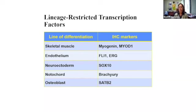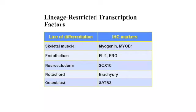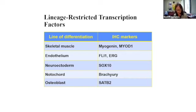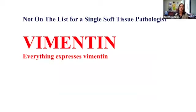Most soft tissue tumors are still H&E diagnoses if you're comfortable looking at slides and know what you could get yourself in trouble with. Immunohistochemistry needs to be applied in a curated fashion. Here are some examples: markers of smooth muscle and skeletal muscle differentiation, vascular markers, and Schwann cell markers — the big one for that is S100 protein, which has been around since the 1980s and is still a wonderful marker.